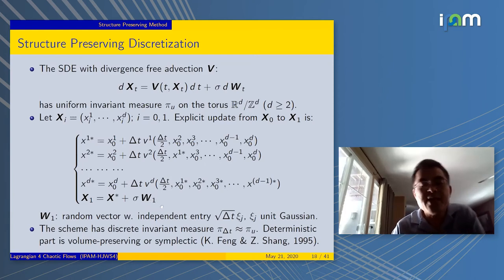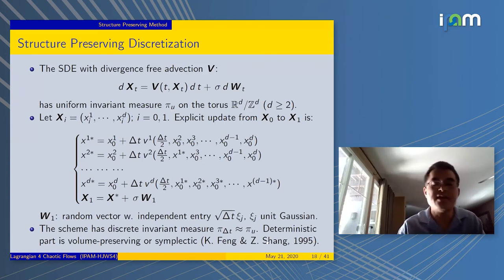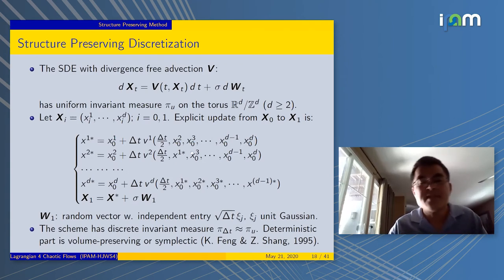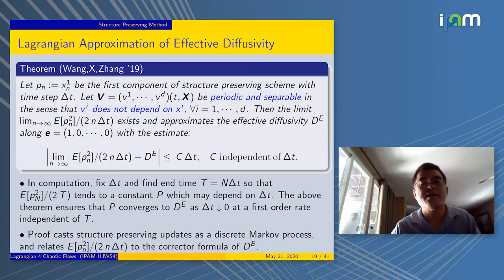This is a standard Gaussian with square root of delta T in front. It turns out that this scheme has its own invariant measure, π_δt. It approximates the true invariant measure π_u, the uniform invariant measure. If there's no noise, this scheme was studied long ago by Feng Kang and his students in 1995. In that case, the method will preserve the volume.